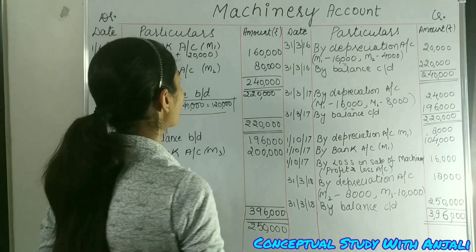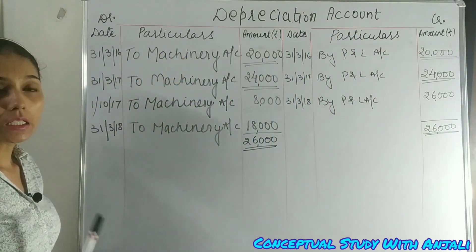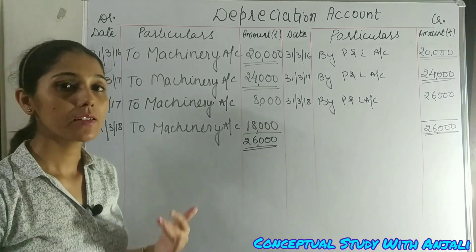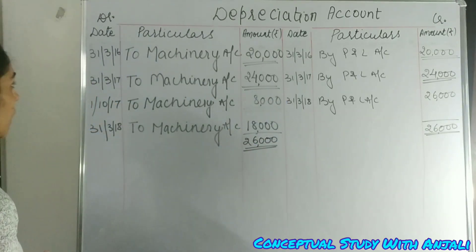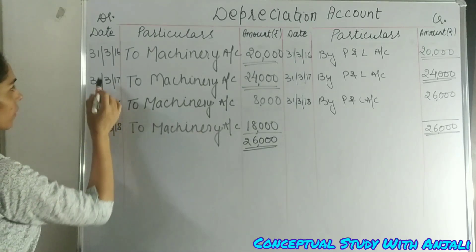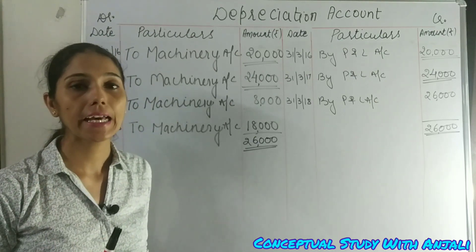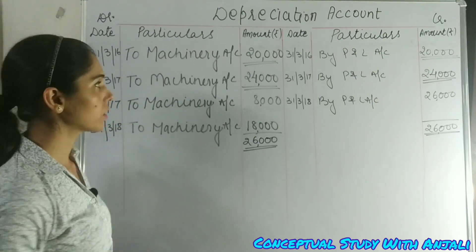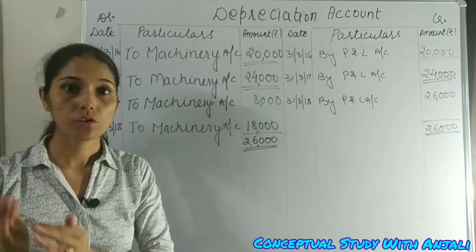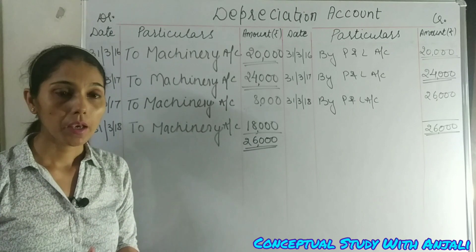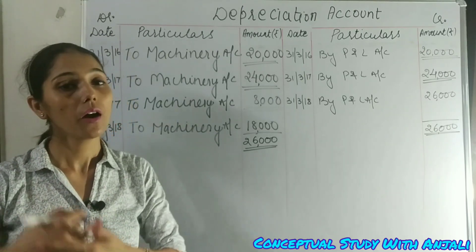Now let's see how to prepare the depreciation account. Depreciation is a nominal account — expenses increasing are shown on the debit side, and we transfer the balance to profit and loss account when the financial year ends. On 31st March 2016, debit machinery account Rs. 20,000 (16,000 + 4,000), then transfer to profit and loss account Rs. 20,000. On 31st March 2017, debit machinery account Rs. 24,000 (16,000 + 8,000), then transfer to profit and loss account Rs. 24,000.